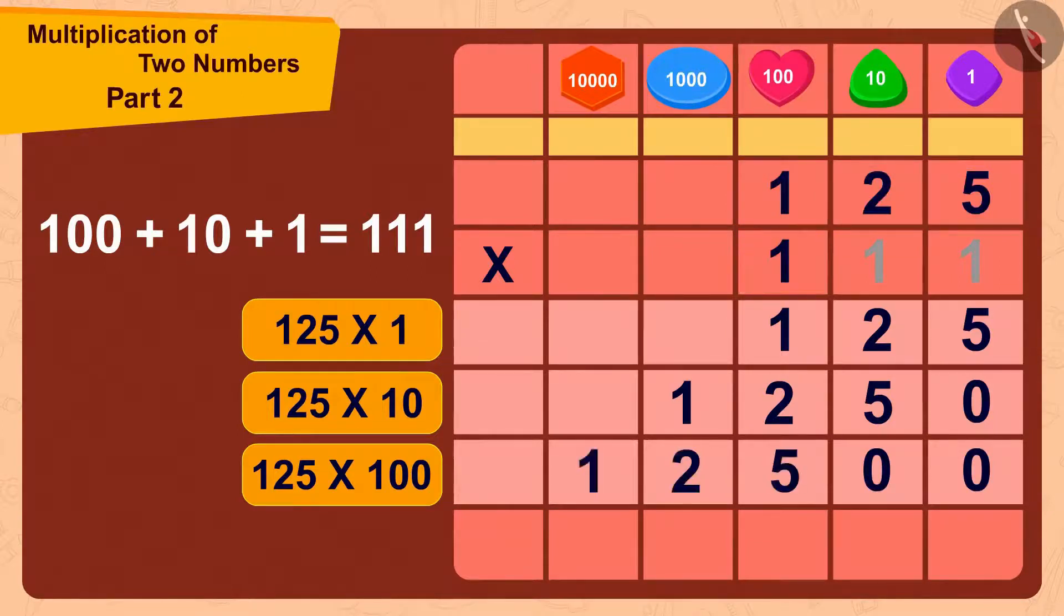Now by adding these three numbers, in the end we get the answer to a multiplication, 125 times 111 as 13,875.